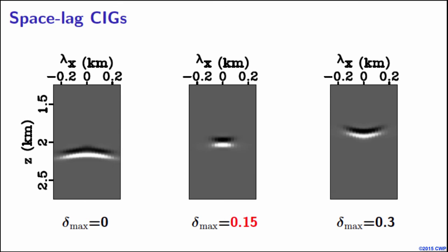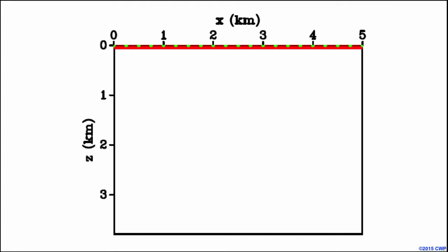These are space lag CIGs. There's no surprise because delta has substantial spatial variation. It does affect the defocusing, and there is strong residual moveout for understated and overstated values of the Gaussian anomaly. So delta_max equal to zero means we have no Gaussian anomaly in the zero background, and delta_max equal to 0.3 means we have overstated value of the Gaussian anomaly. The Gaussian anomaly is too strong.